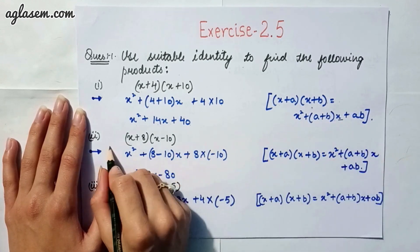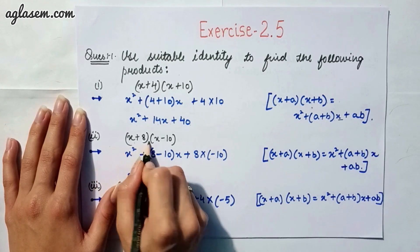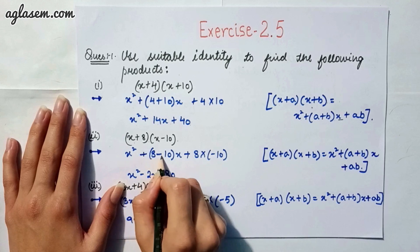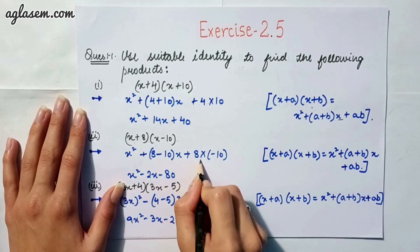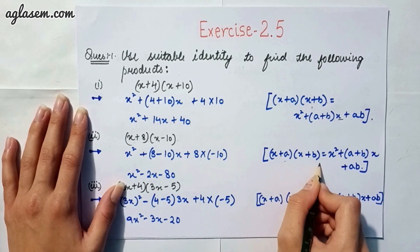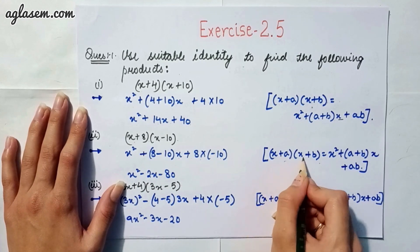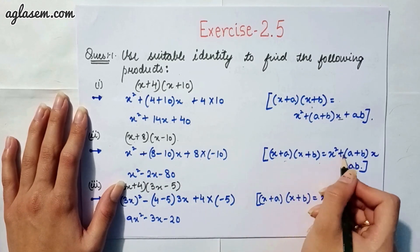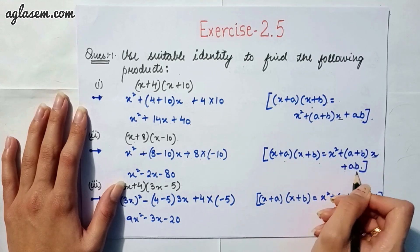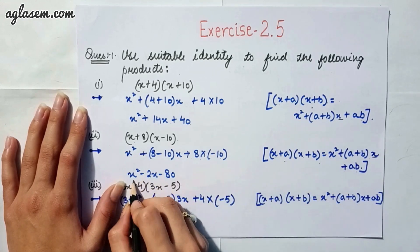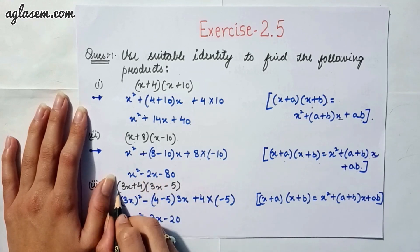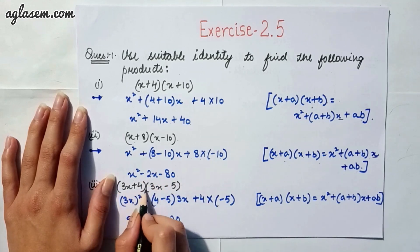Moving to our second part, which says (x + 8)(x − 10). By using the same identity (x + a)(x + b) = x² + (a + b)x + ab, we get x² + (8 − 10)x + 8×(−10), giving the answer x² − 2x − 80.